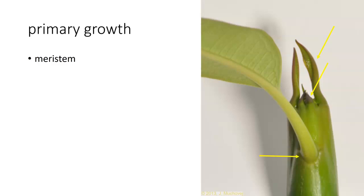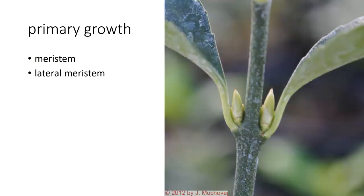This is a meristem and all of this growth starts from a central spot in the tip of that particular plant — we call that the meristem. We can also have lateral meristems, which are meristems that you find at leaf joints.